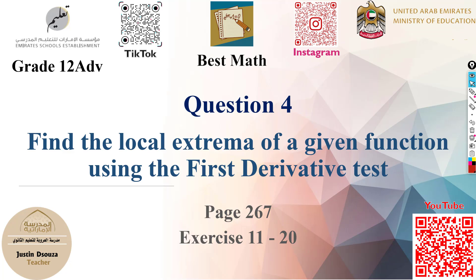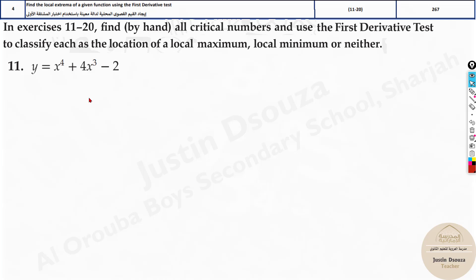Question 4 is to find local extrema using first derivative test. Now we have done this plenty of times in the previous questions. All three questions in fact we have come across this topic. So you can just do that. I will just quickly tell you how. It is just deriving this.